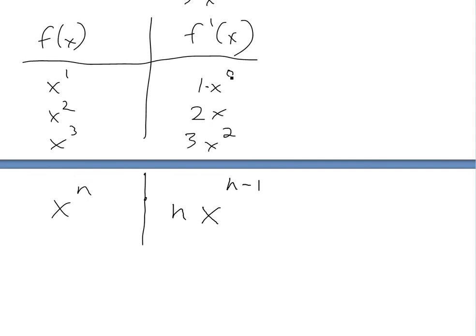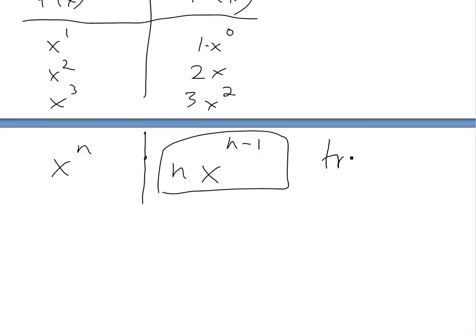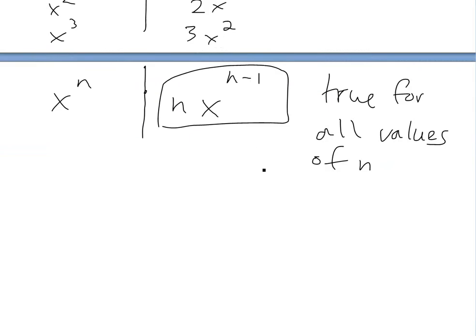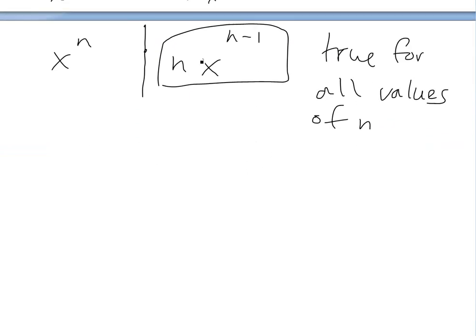So basically, if this was 1, put the 1 here, minus 1, 0. So this is basically it. This is the pattern here. This is actually true for all values, true for all values of n. Even if it's negative or whatnot, I'll prove that later. But to get the general proof of here for positive integers, we'll just go proof.